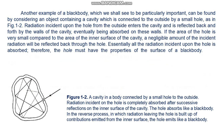Another example of a black body, which we shall see to be particularly important, can be found by considering an object containing a cavity connected to the outside by a small hole, as in Figure 1.2. Radiation incident upon the hole from the outside enters the cavity and is reflected back and forth by the walls of the cavity, eventually being absorbed by the walls. If the area of the hole is very small compared to the area of the inner surface of the cavity, a negligible amount of the incident radiation will be reflected back through the hole — essentially all of the radiation incident upon the hole is absorbed. Therefore, the hole must have the properties of the surface of a black body. Most black bodies used in laboratory experiments are constructed along these lines.